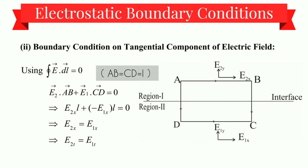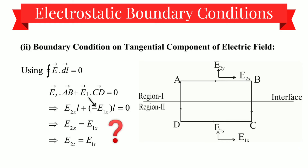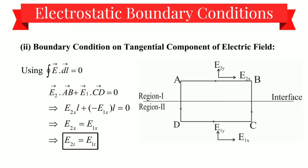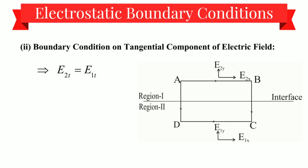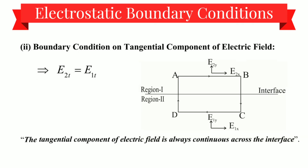Here AB and CD are equal to l, the length. In this case we take the x-components, so we write E₂x·l minus E₁x·l equals zero — the minus sign because it is opposite to the direction of E₂x. We get E₂x equals E₁x, and replacing the x-component with the tangential component we can finally rewrite it as E₂t equals E₁t. Here E₁t is the tangential component just below the interface and E₂t is the tangential component just above it. Thus the tangential component of electric field is always continuous across the interface.